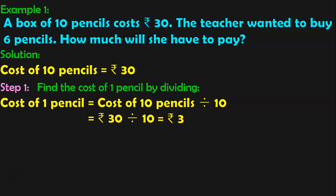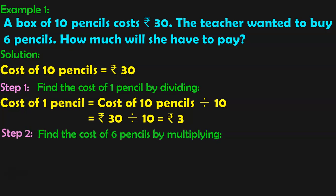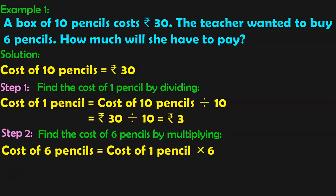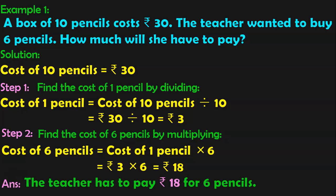What is the next step in Unitary Method? Once you find the cost of 1 item, you can find the cost of many items by multiplying. That will be Step 2: Find the cost of 6 pencils by multiplying. To find the cost of 6 pencils, you should multiply the cost of 1 pencil by 6. Cost of 1 pencil is Rs. 3, multiplied by 6 gives 18. So Rs. 18 is the answer — the cost of 6 pencils. The teacher has to pay Rs. 18 for 6 pencils.